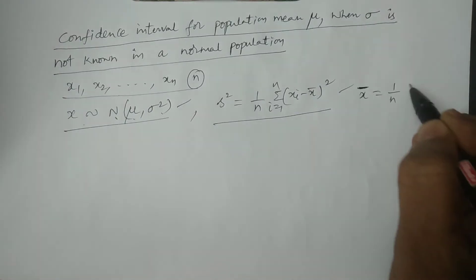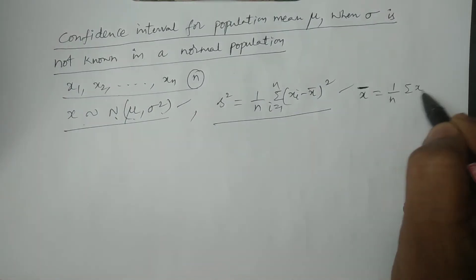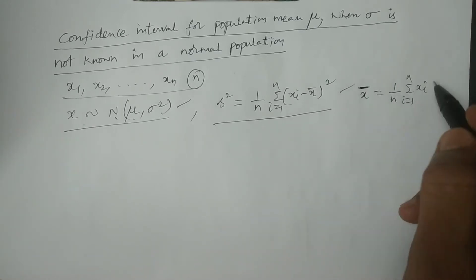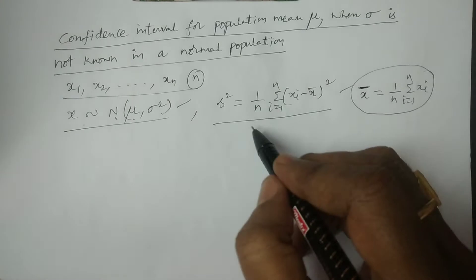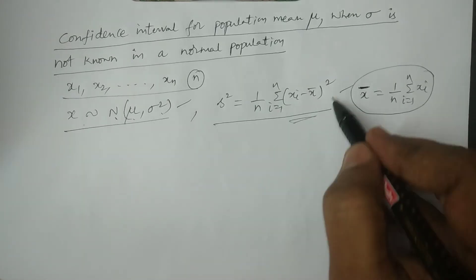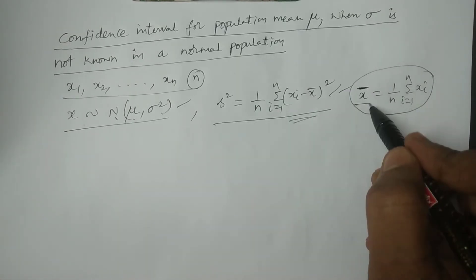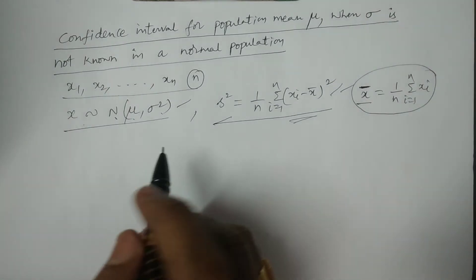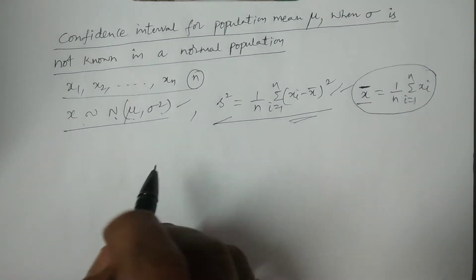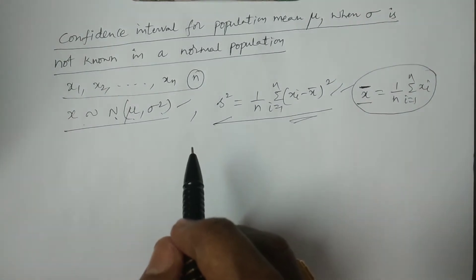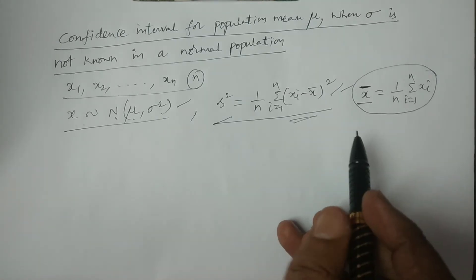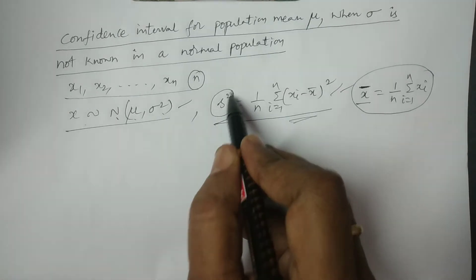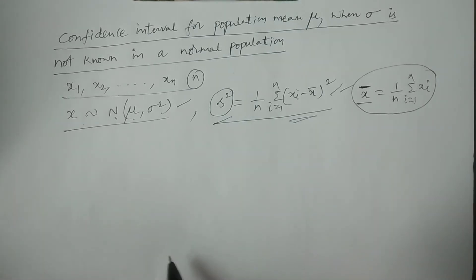The X̄ formula is the simple sample mean: X̄ = (1/n) · Σᵢ₌₁ⁿ Xᵢ. So X̄ is the sample mean and S² is the sample variance. Both of these values have significance. Whenever σ is not known, S is going to be considered — it is used to estimate σ.